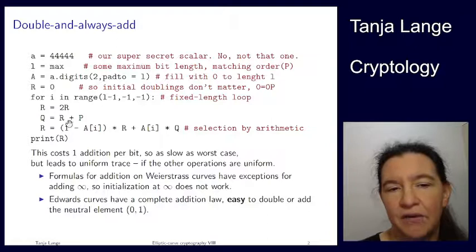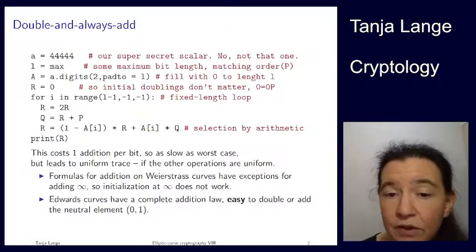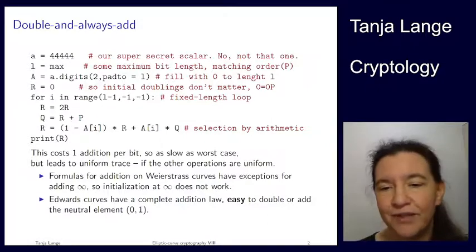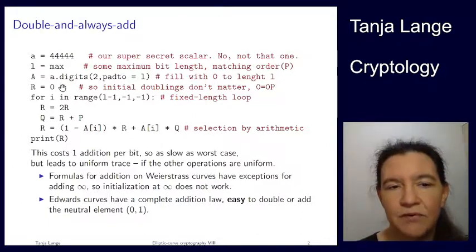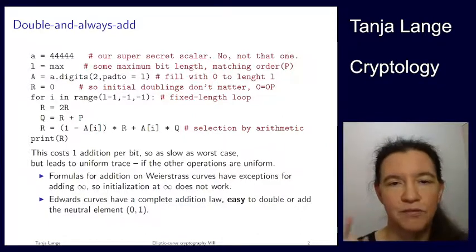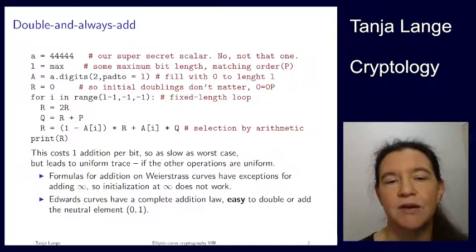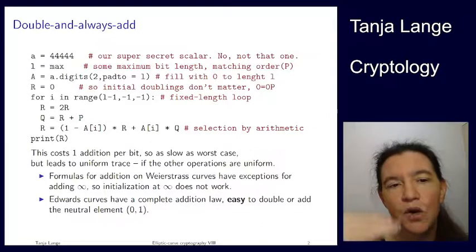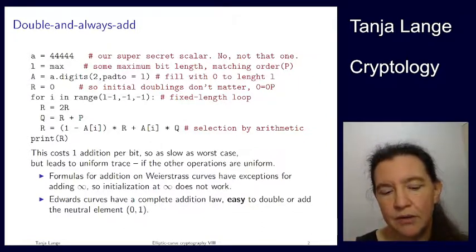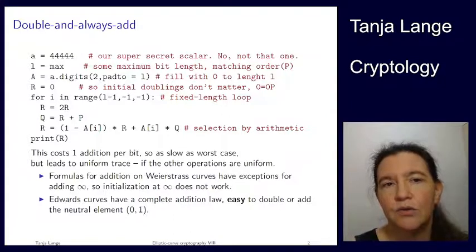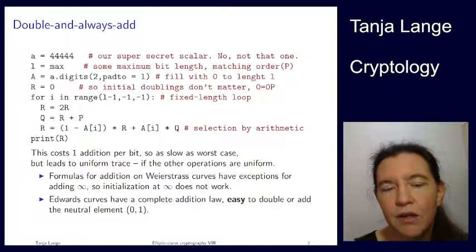Now it also depends a lot on how you represent things. So I said already the neutral element on Weierstrass was this point infinity. And for typical implementations infinity is not a valid input. So we can't actually do this one easily on a Weierstrass curve. So initialization at infinity would require a valid format to put this in and have this valid format be fine with doubling and with addition. For Edwards curve, we have proven that this is a complete addition law. So initializing at zero one on the Edwards curve here is perfectly valid. So Edwards curves, or twisted Edwards curves, are again the easy and nice case where this double and always add method works as described here.